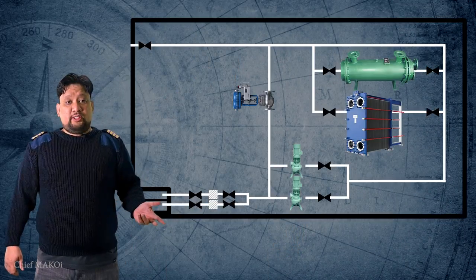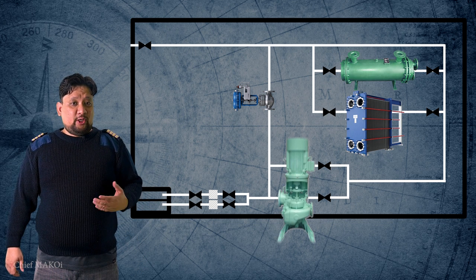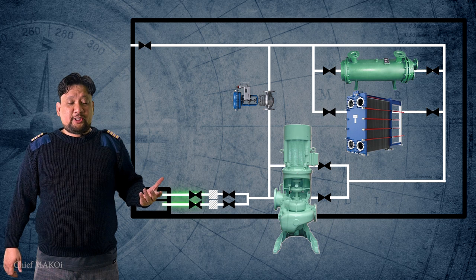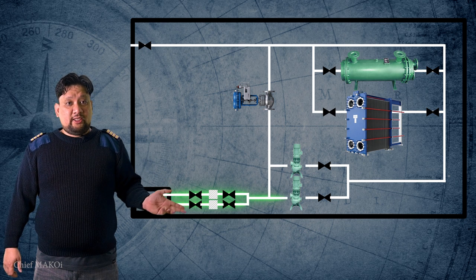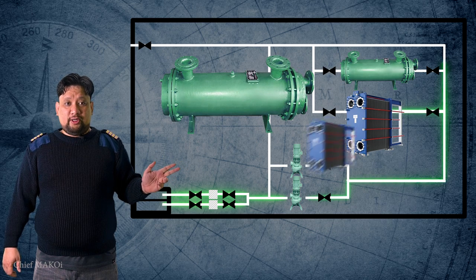The principle of operation of a ship's seawater cooling system is pretty much straightforward. The basic parts are composed of a main seawater pump, which takes suction from the sea through the sea chest, and then it delivers the seawater into the heat exchangers or coolers.